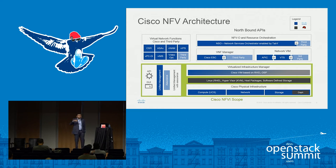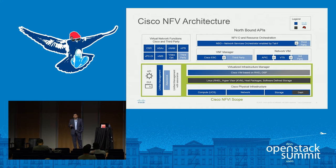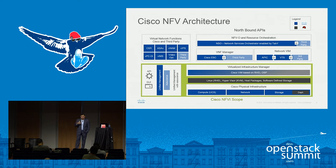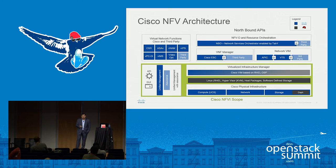Double-clicking on the infrastructure side: compute is based on Cisco UCS — Unified Computing Systems. Network is based on Cisco Nexus 9000 switches. Storage is based on Cisco UCS servers. On the software side, the operating system is Red Hat Enterprise Linux, storage is based on Red Hat Ceph, and the Cisco VIM is based on Red Hat OSP.